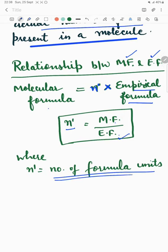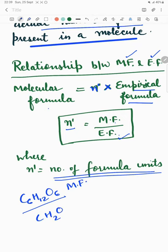N is number of formula units. We have taken example of C6H12O6, this is the molecular formula. CH2O is empirical formula. So, N here is 6.